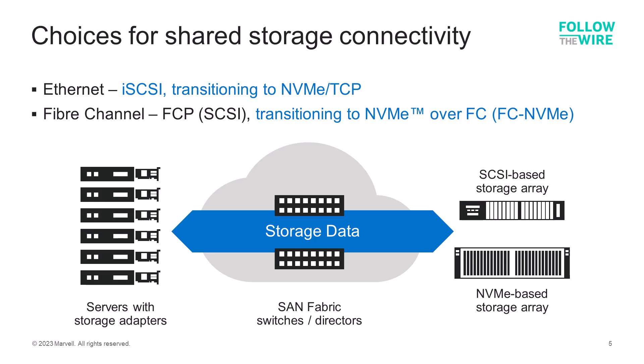With Ethernet, SCSI commands are embedded in TCP/IP packets — this is referred to as iSCSI. With Fiber Channel, SCSI storage commands are embedded in the Fiber Channel frames transmitted across the network, referred to as FCP or Fiber Channel Protocol. With next-generation storage, the storage commands will be using a different language — NVMe instead of SCSI — to improve the efficiency and performance of the storage communications.